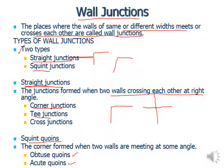For squint junctions, walls meet at some angle — either greater than 90 or less than 90 degrees. Those corners are formed by adjusting the junctions by putting different types of bricks called queens. If you are cutting a brick along its length or width to adjust the corners or junctions of a wall, those are called queens. If these corners are at some angle, they are called squint queens.